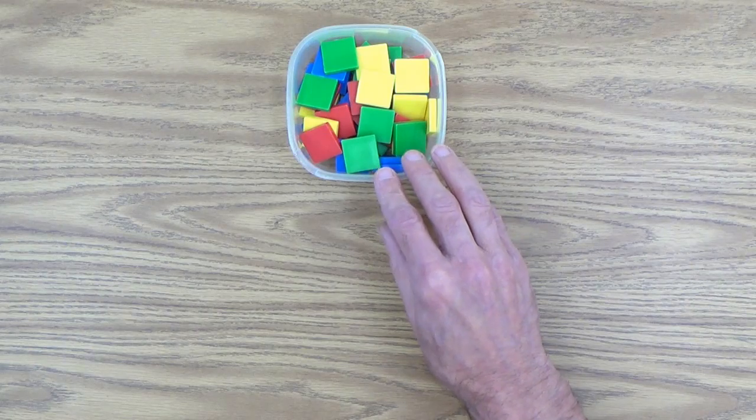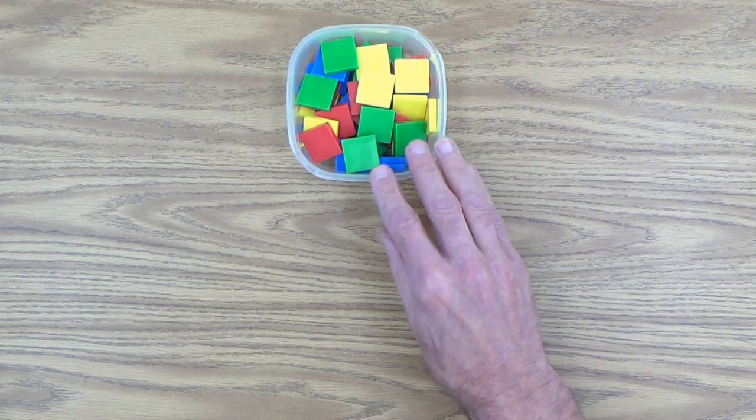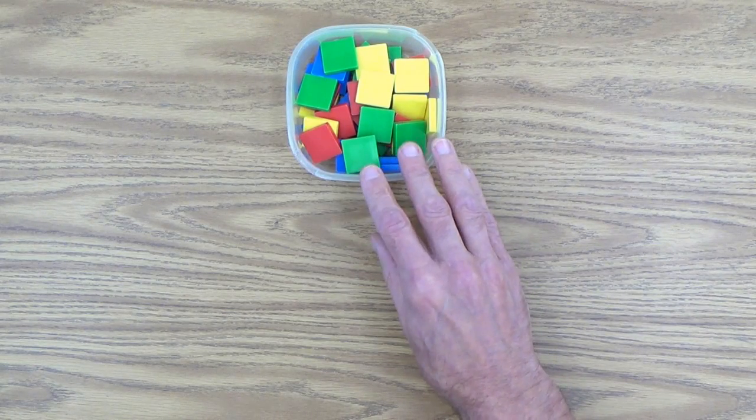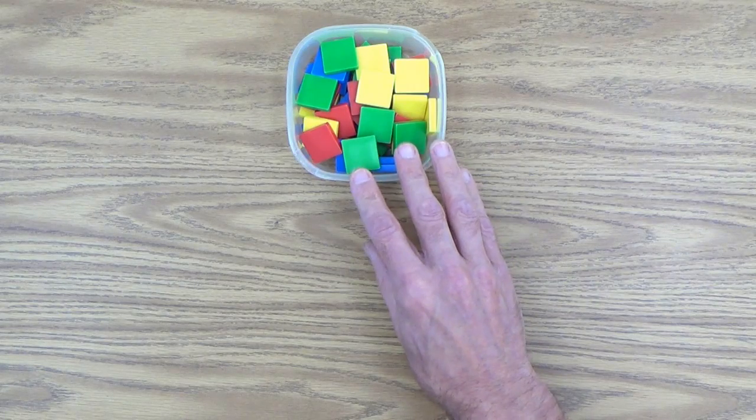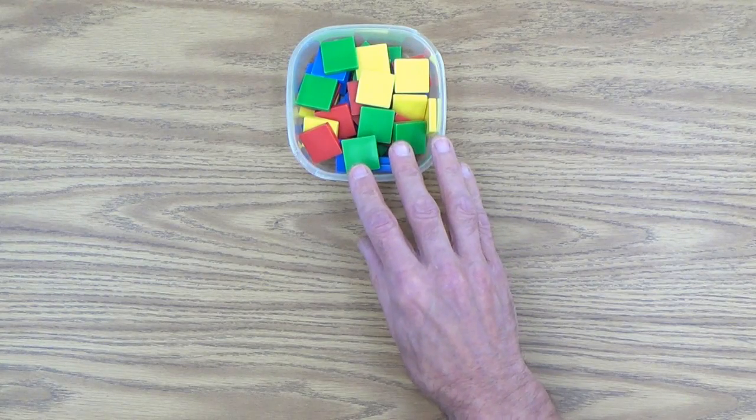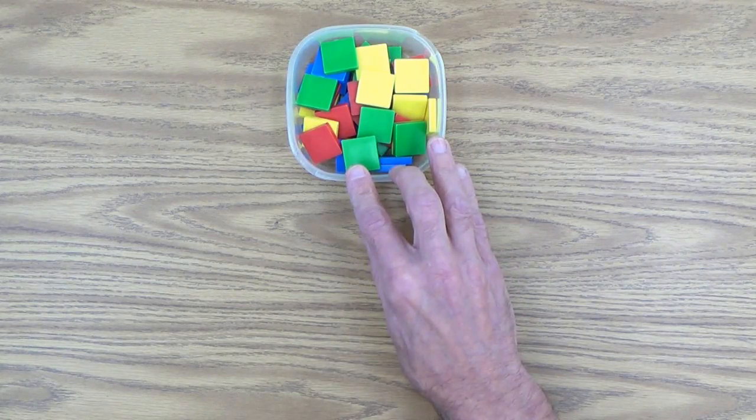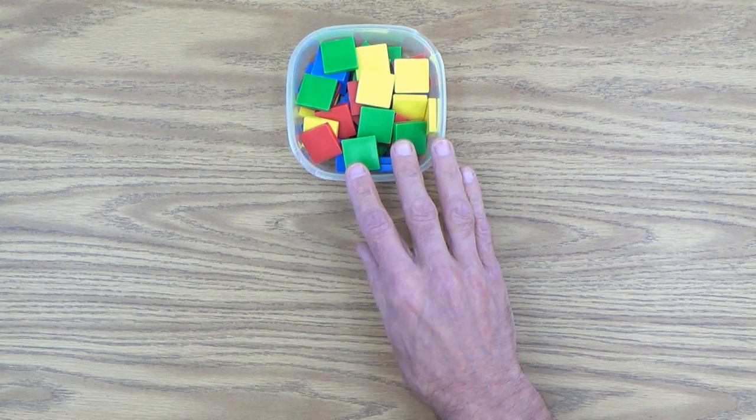As you can see, I have a bank of color tiles here. Four different colors: green, blue, red, and yellow. In all other ways, they're exactly the same. Only the color varies.